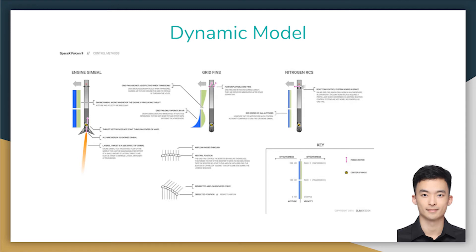I'm Junhao. Here I will introduce the dynamic model for our 2D rocket simulation process. We have two systems. The first original system has only thrust vector as control input. This control input consists of two elements. The first is the magnitude of the thrust, which is represented as the ratio of thrust over max available thrust.